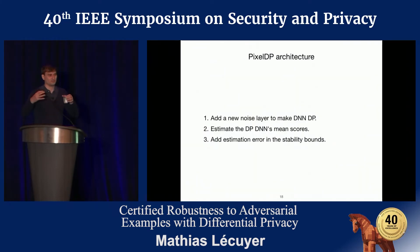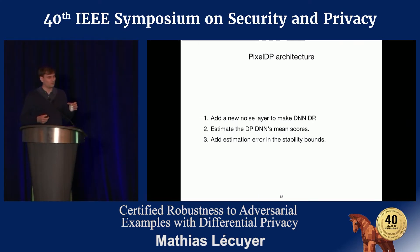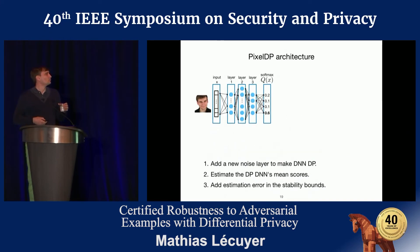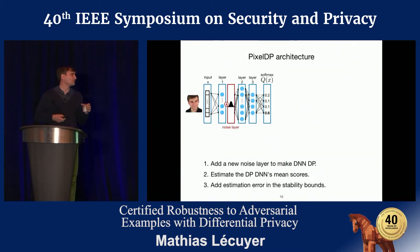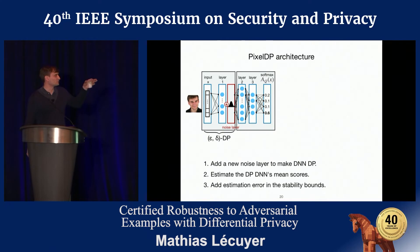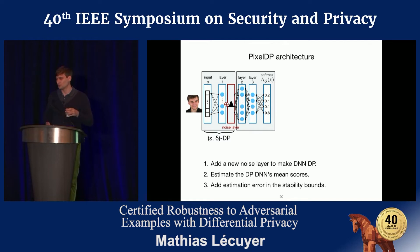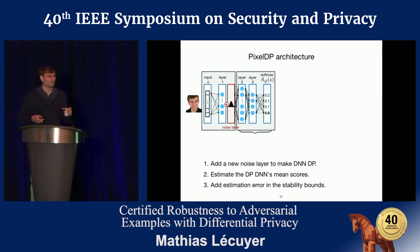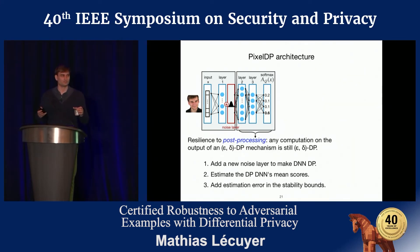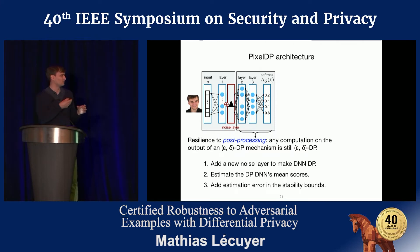How do we do this in practice? First, to make the prediction function differentially private, we add a noise layer that ensures the computation up to that point is differentially private. The second part is post-processing of a differentially private output, and a well-known result in differential privacy is that it's resilient to post-processing — so the final scores given by the neural net are also differentially private.